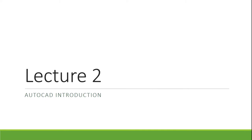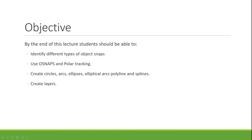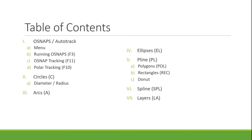This is going to be your Lecture 2 of your AutoCAD introduction class. By the end of this lecture, I hope that you can identify different types of OSNAPs and use OSNAPs. We're going to learn how to create circles, arcs, elliptical arcs, polylines, and splines. And we're also going to learn how to create layers.